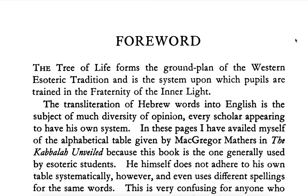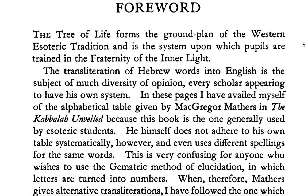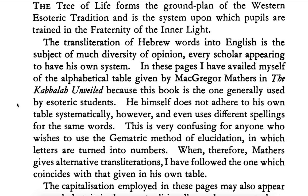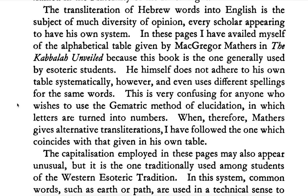The Tree of Life forms the ground plan of the Western esoteric tradition and is the system upon which pupils are trained in the fraternity of the inner light. Fraternity, Brotherhood — that's a kind of a swappable term. And the inner light must refer to some inner Jesus, I suppose. The translation of Hebrew words into English is the subject of much diversity of opinion — that's a very nice way of putting it. Every scholar appears to have his own system. In these pages, I have availed myself of the alphabetical table given by McGregor Mathers in The Kabbalah Unveiled, because this book is the one generally used by esoteric students.